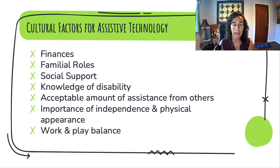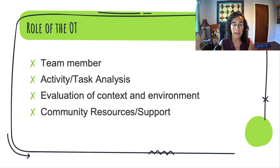We want to take that into account, along with the balance of work and play — whether the child is engaged with schoolwork, since education is the work of kids, as opposed to playing on assistive technology. The role of OT in working with AT is as a team member. We also have a role in task analysis, evaluating the context and environment, and providing community resources and support.